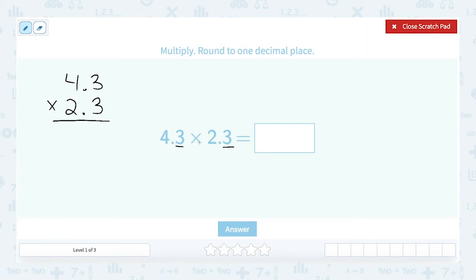So my factors are 4.3 and 2.3. So I look at the digit furthest to the right in each factor and those are the digits that I line up. Now in this particular problem because there's only one decimal place in each factor, my decimals just so happen to line up as well. That will not always be the case though.